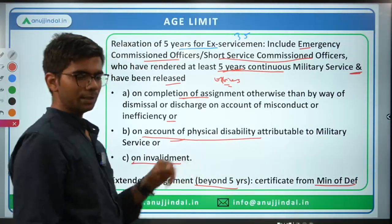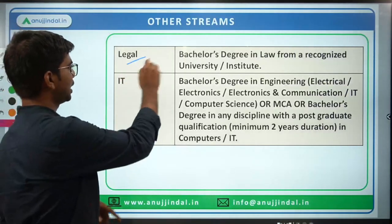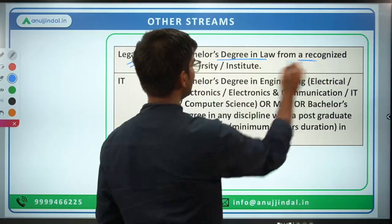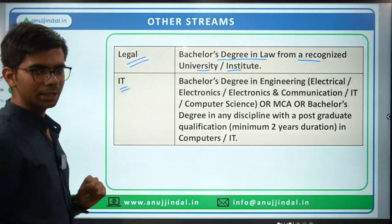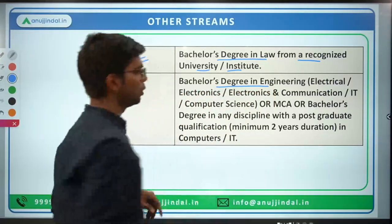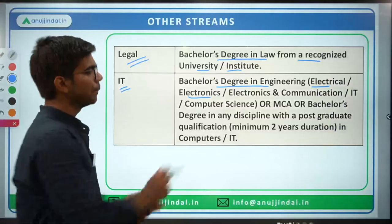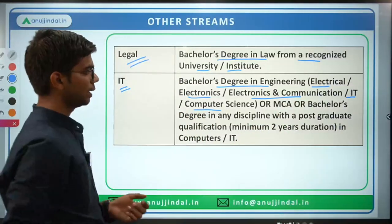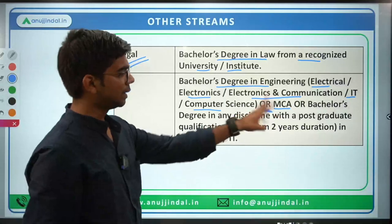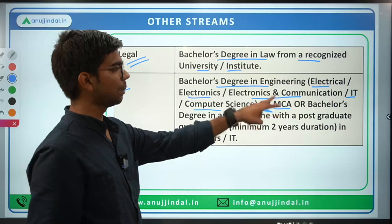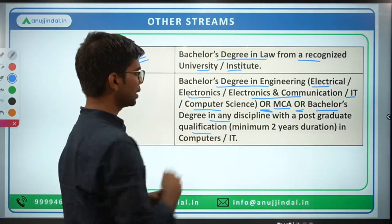Now for other streams: in the Legal stream, the educational qualification required is a Bachelor's degree in Law from a recognized university — this is the single condition, no options. For the IT (Information Technology) stream, you need a Bachelor's degree in Engineering, specifically in Electrical, Electronics, Electronics and Communication, Information Technology, or Computer Science. Alternatively, you can have a Master's in Computer Applications (MCA) regardless of your bachelor's field.